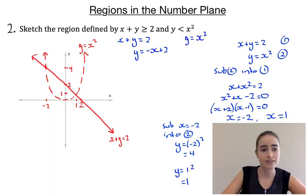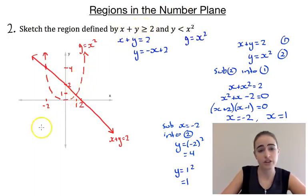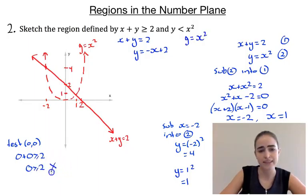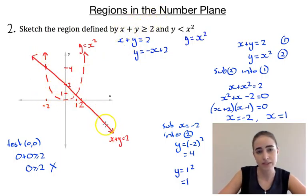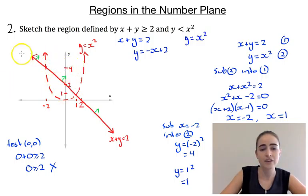Now let's figure out our regions. We need to know whether to shade above or below the straight line. Testing the point (0, 0): substituting into x + y ≥ 2 gives 0 + 0 ≥ 2, or 0 ≥ 2, which is false. So (0, 0) is not in the region defined by that inequality, meaning we shade above the straight line.